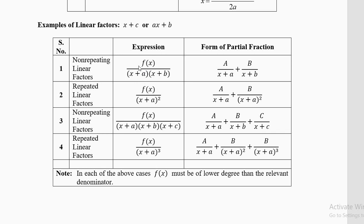Now let's look at the first expression: f(x) divided by (x plus a)(x plus b). In the denominator we have two linear factors; if you multiply them, we get a degree-two expression. So the function f(x) should have one degree lower — it must be degree one, which is linear.